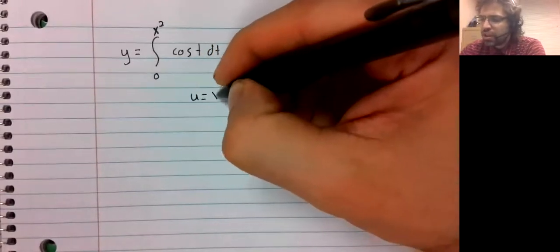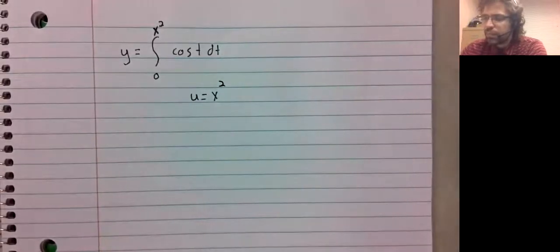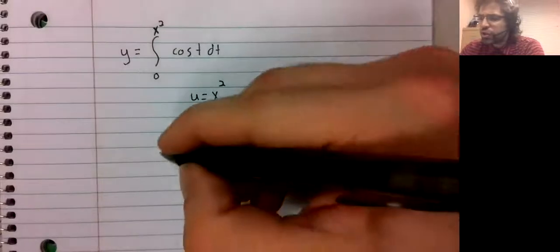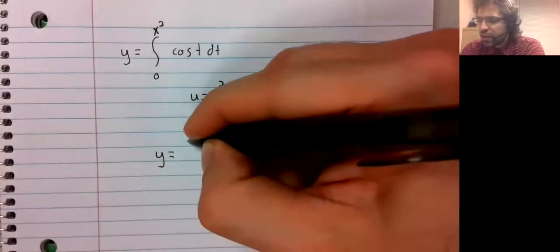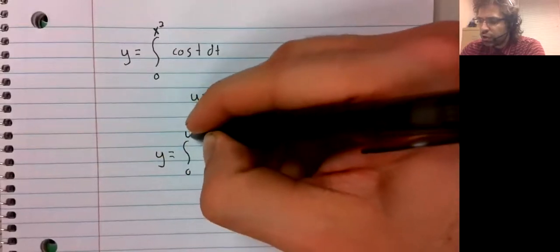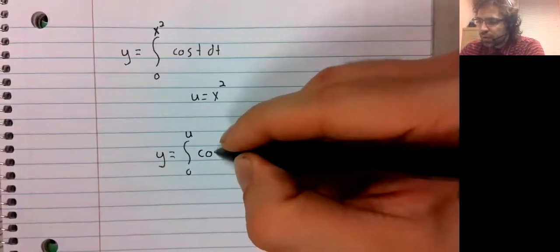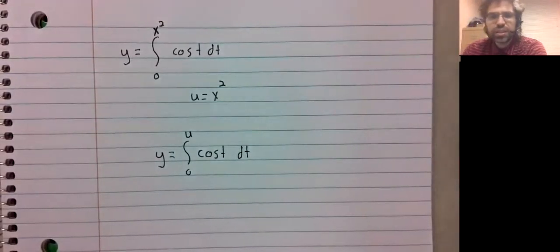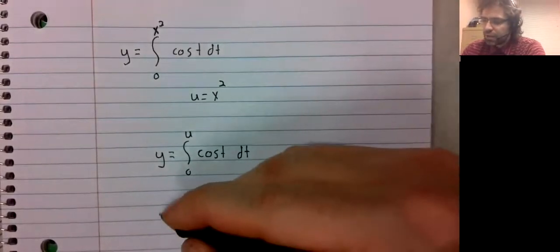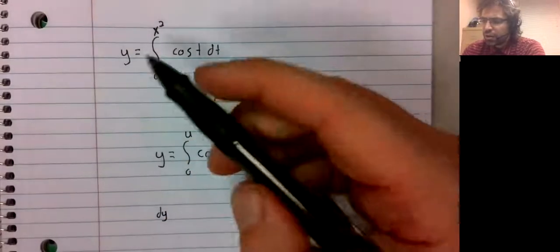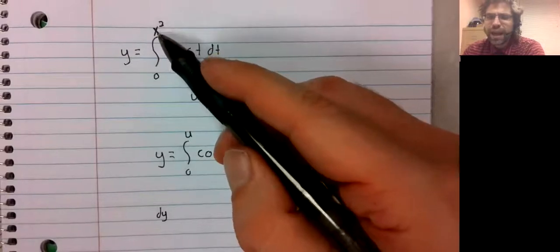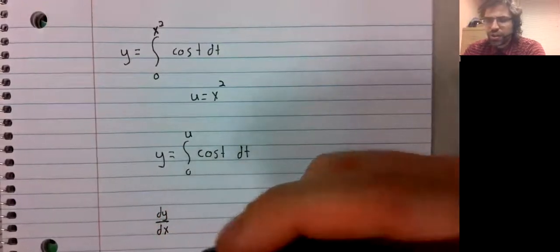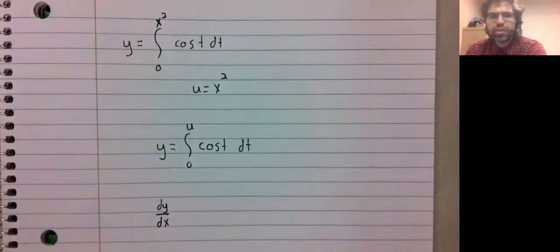But the trick here is just to let whatever we have up here have a name, call it U. Y equals the integral from zero to U of the cosine of t dt. Now be careful here. Y is a function of X. The derivative we actually want, then, is dy dx.